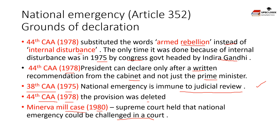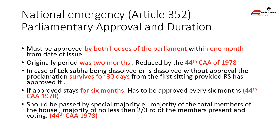The national emergency must be approved by both houses of Parliament within one month of the date of issue. The 44th Constitutional Amendment Act of 1978 reduced this period from two months to one month. If the Lok Sabha is dissolved or dissolution takes place during that one month without approval, the proclamation survives until 30 days from the first sitting of the reconstituted Lok Sabha, provided the Rajya Sabha has already approved it. It then stays approved for six months and must be reapproved every six months by both houses.